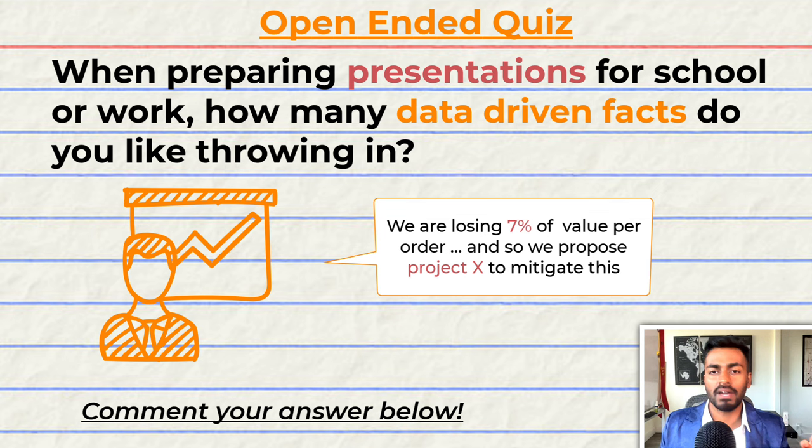When preparing my conjecture, I add little single facts that pull a lot of weight. For example, the facts should be big picture and hence easy to understand. They should also act as a motivator and a conversation starter. We could make a statement like, we are losing 7% of value per order, and so we propose Project X to mitigate this. So turning the question over to you, how would you prepare for these presentations? Please comment down below and I would love to know your thoughts.